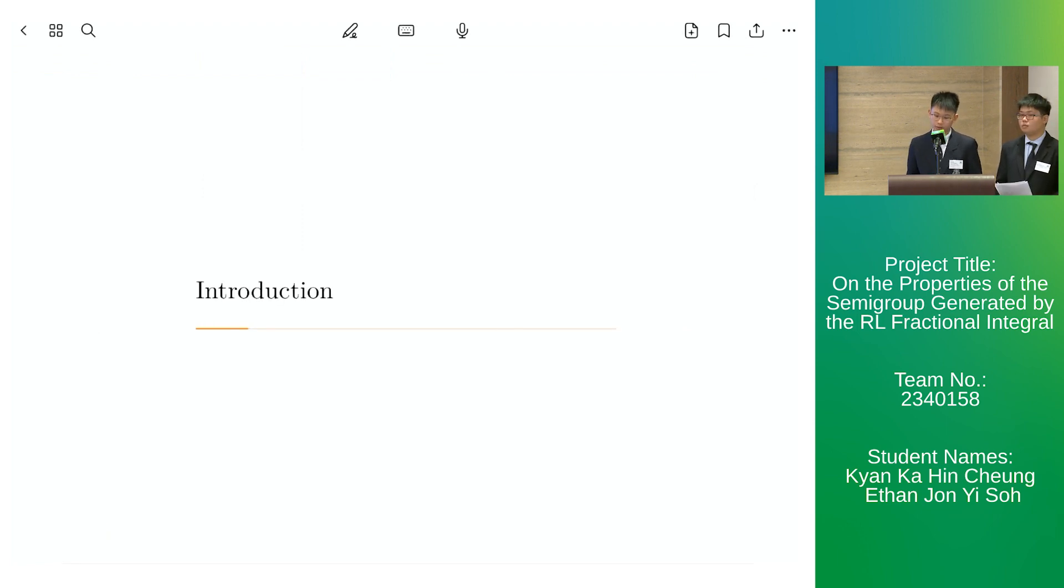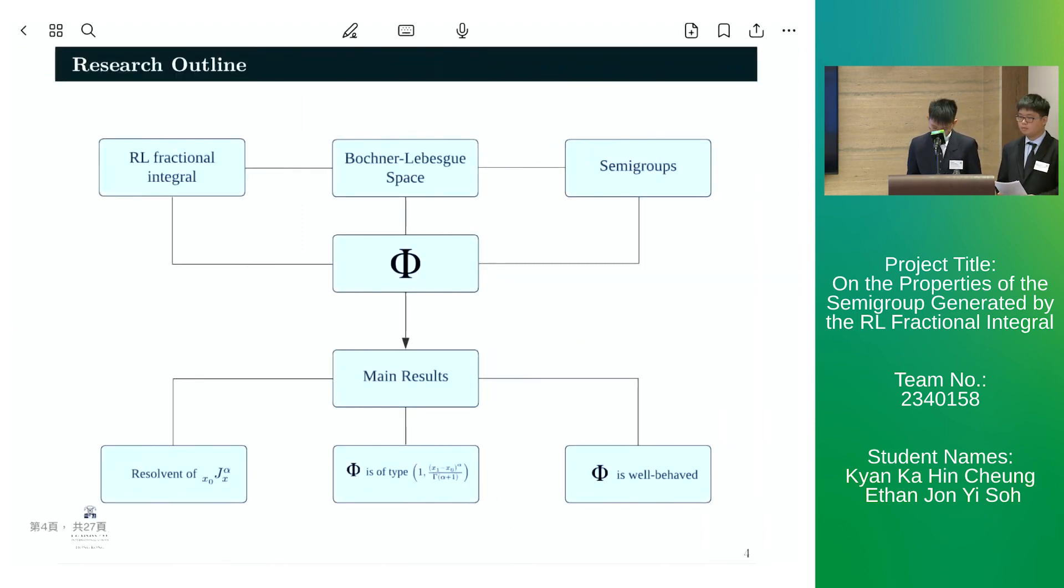Firstly, let us briefly go through the outline of our research. In our paper, we seek to combine three concepts, namely the fractional integral, Bochner-Lebesgue space, and semigroups to form an operator phi, which we use to denote the semigroup generated by the Riemann-Liouville fractional integral. This leads us to our main results, of which we can decompose into three parts.